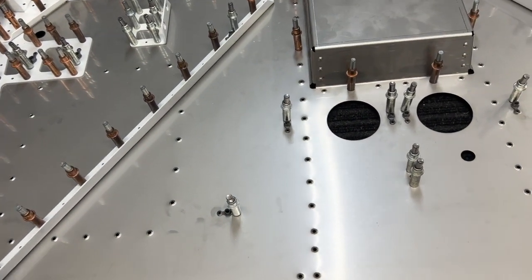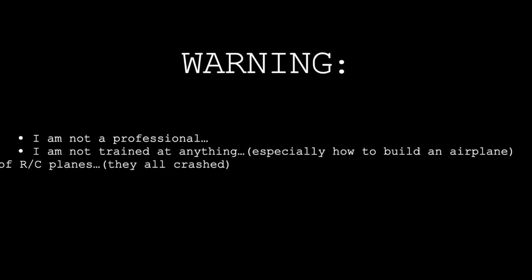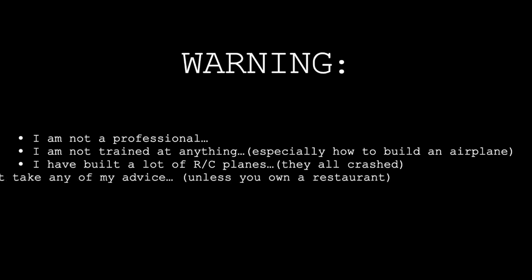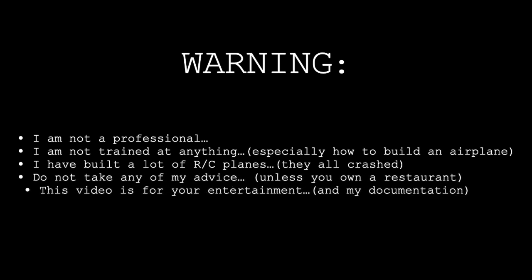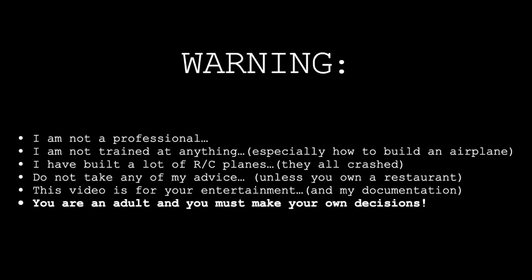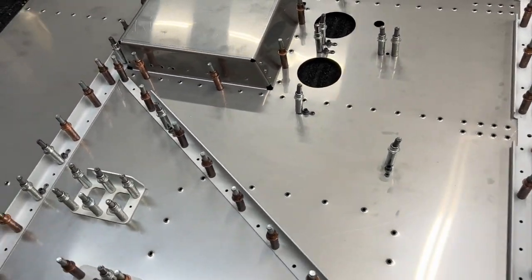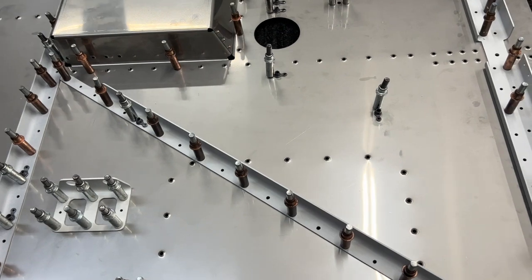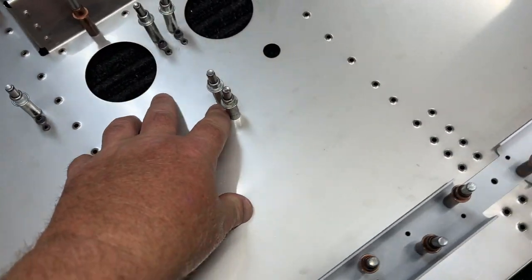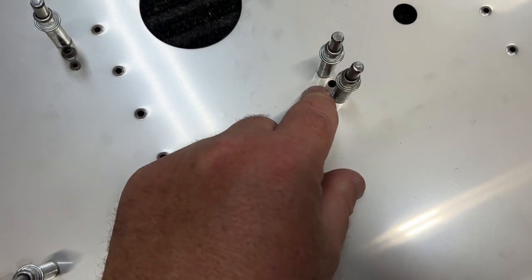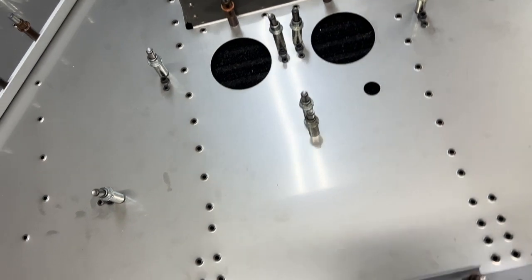All right, so here we are on section 27, working on the firewall. I've gone ahead, and it's been pretty straightforward up to this point. You just want to take your time, make sure you've got everything going in the right direction. There's a couple of nut plates that go on the hot side. We'll call it the hot side and the cold side. We're looking at the cold side right now. So this nut plate goes on the hot side. This one goes on the hot side. The rest go on the cold side.